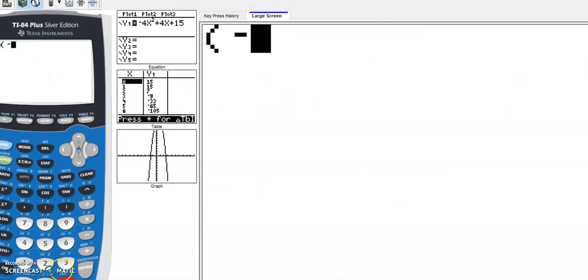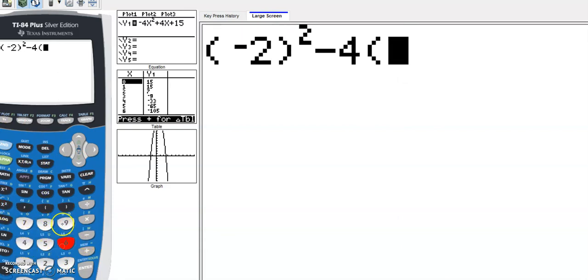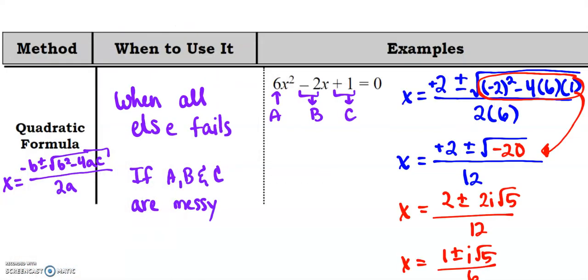And then from there with that negative 20, we need to break that out into negative 1 times 4 times 5. We take the square root of negative 1, that's i, square root of 4, that's 2. Square root of 5 is just the square root of 5, and then we divide everything by 2.